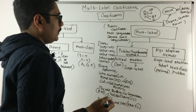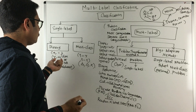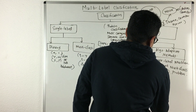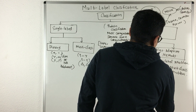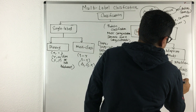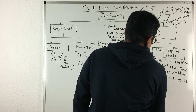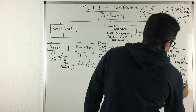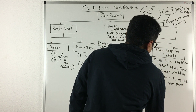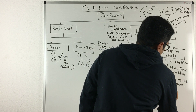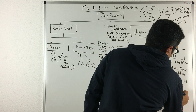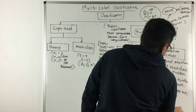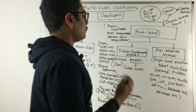In algorithm adaptation methods, you take a base single-label classification algorithm and adapt it to your multi-label problem. Examples include: multi-label decision tree, multi-label k-nearest neighbors, multi-label naive Bayes, SVM methods like SVM with heterogeneous feature kernels (SVM-HF), rank SVM, back-propagation multi-label learning (BPMLL), and AdaBoost variants like AdaBoost.MR and AdaBoost.MH. We will be seeing some of these methods in subsequent discussions.